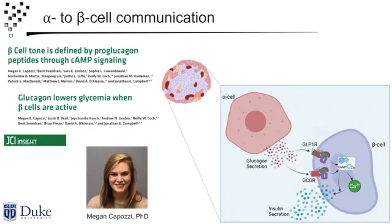The story begins with Megan Kaposi, a postdoc — my first postdoc when I moved to Duke. She had a couple of papers that started with a very simple question. If we look at the idea that alpha cells secrete glucagon, we know there is a glucagon receptor on the beta cell. She wanted to ask: what kind of interaction is that? There's been a lot of literature on paracrine interactions within the islet, but it's mostly beta cells to alpha cells or beta cells to delta cells — not a ton of literature on what the alpha cells are doing to beta cells, at least when we started this project.